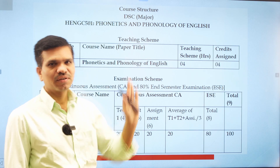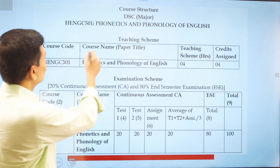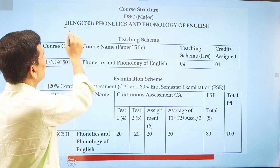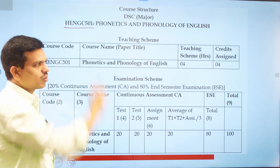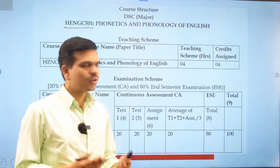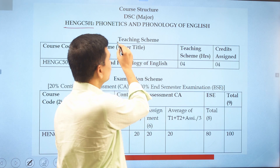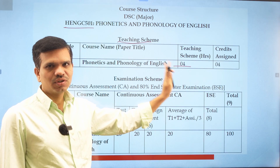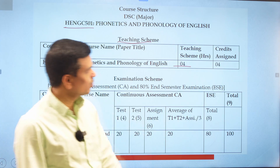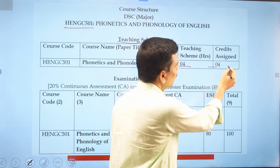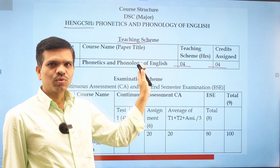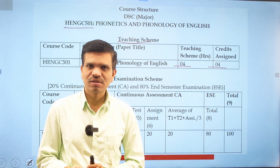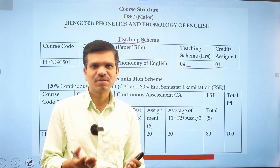Here we have a major course — a discipline-specific course — and in it we have the course Phonetics and Phonology of English. The course code is HENGC 501 and we have four hours of teaching per week. Looking at the teaching scheme, these are the four hours of teaching or four lectures you have to attend to complete the syllabus, and four credits are given to this course.